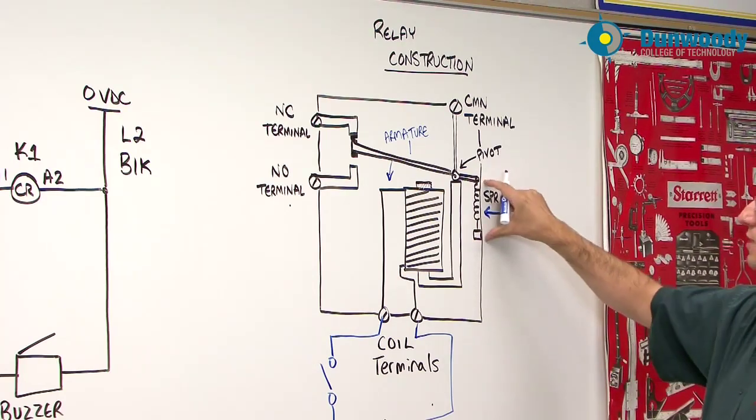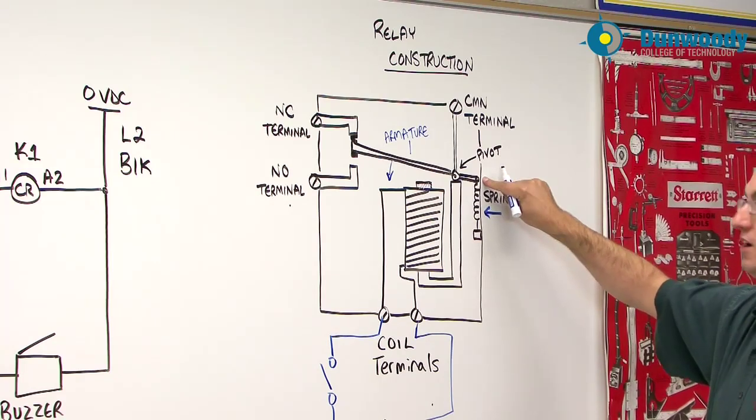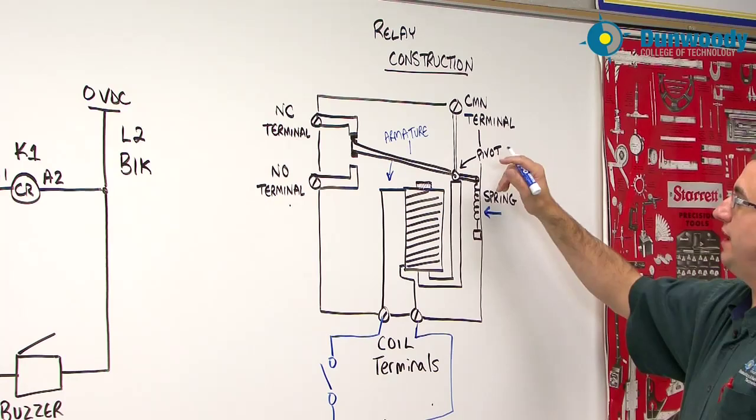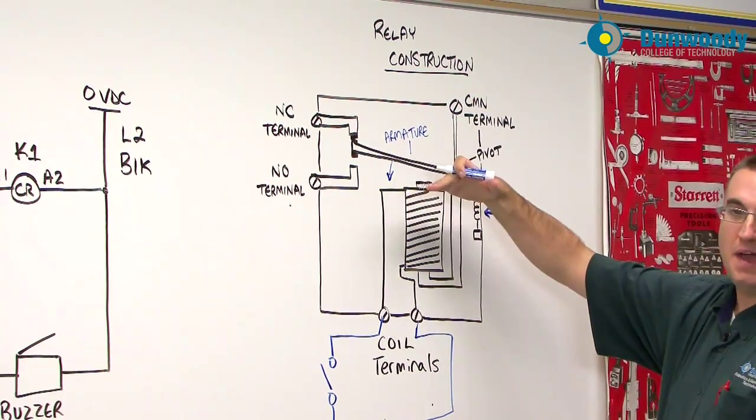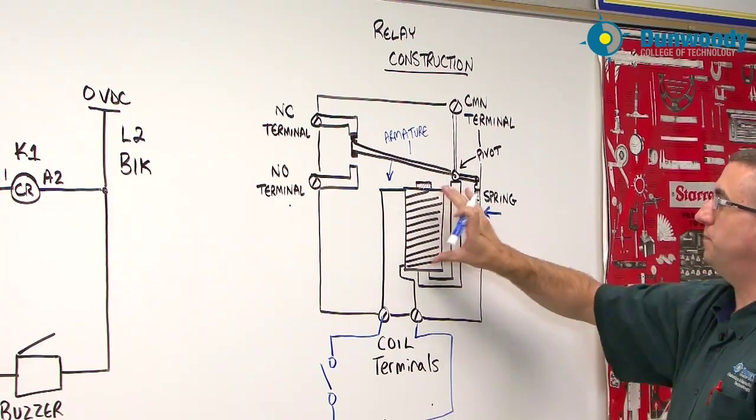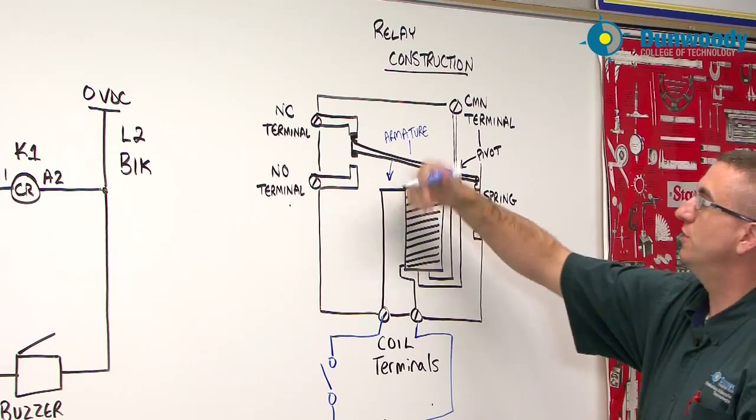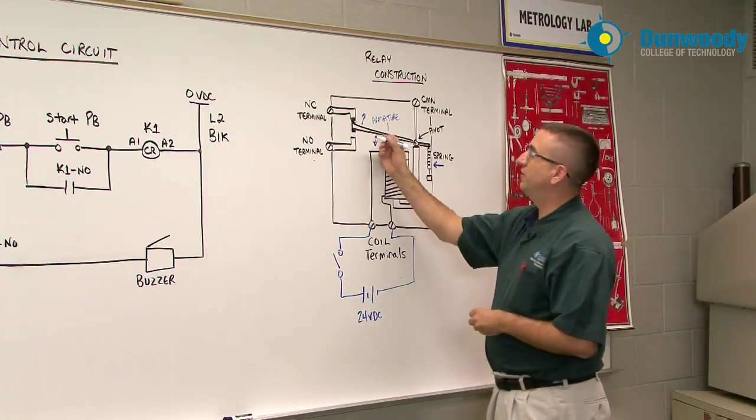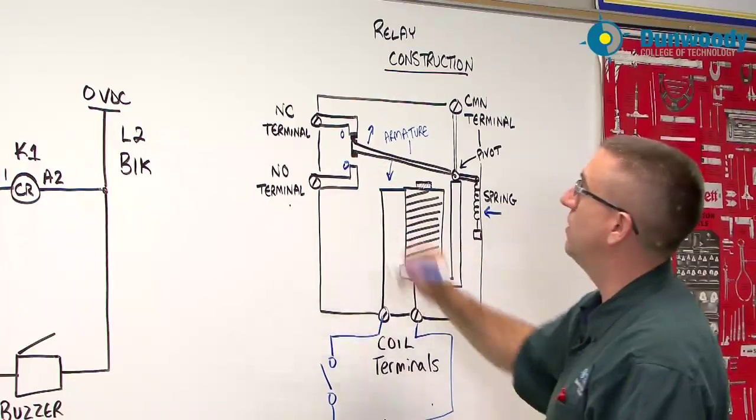So we can see that this spring is actually attached to the armature itself and the armature pivots on this pivot point right here. And what happens is when I energize the coil, the armature is pulled down by the magnet. And when I release power to the coil, the spring is going to pull back down on the armature and bring it back up. So basically this armature is going to bounce between two points. And this would be one point here and this would be one point here.